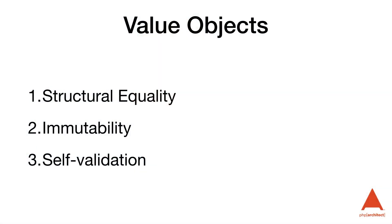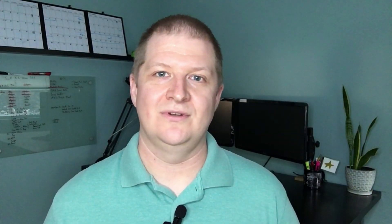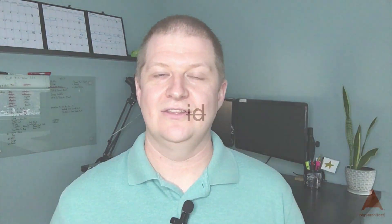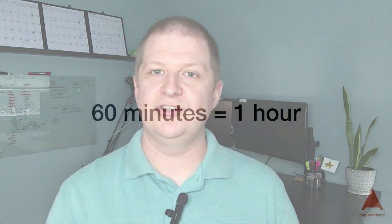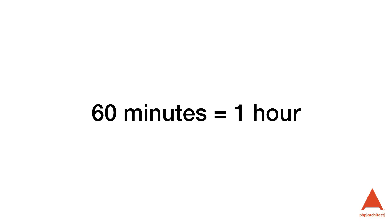When designing value objects, there are three main characteristics: structural equality, immutability, and self-validation. Let's break those down. Structural equality: a value object differs from an entity in that it does not have a concept of identity, so there's no ID column for us to compare. Value objects are instead defined by their attributes, and they are considered equal if their attributes are equal — thus, they're structurally equal. For example, if we consider a time span as a value object, a duration of 60 minutes would be the same thing as a duration of one hour, since the underlying value is the same.